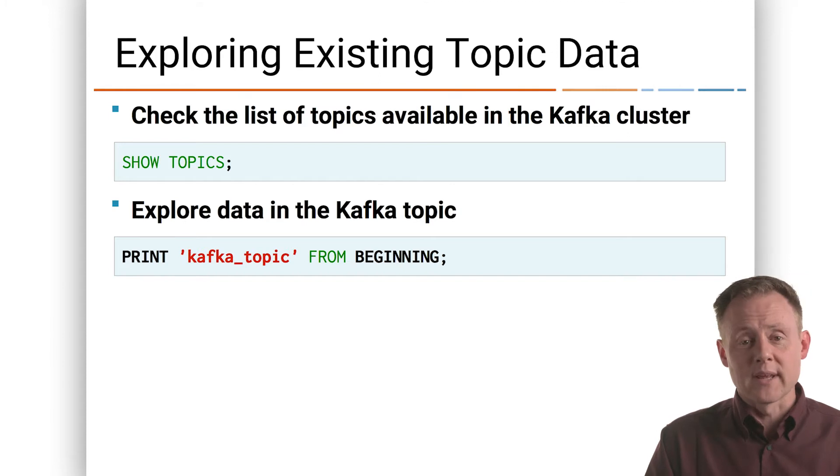In fact, KSQL even gives you a command for that called show topics. Type that command at the KSQL CLI, and you'll see a list of the topics in the cluster. Print and then topic name will dump out the data in that topic. Now, if you look at the example here, you'll notice Kafka topic is in single quotes. That's because KSQL is case sensitive. So if it's something lower case like that, we're going to want to put it in single quotes so that we get the right topic name.